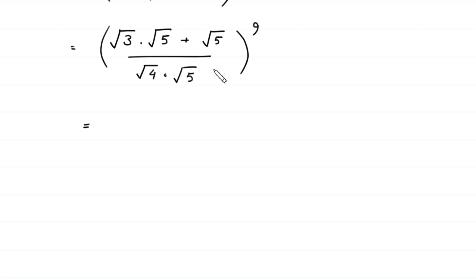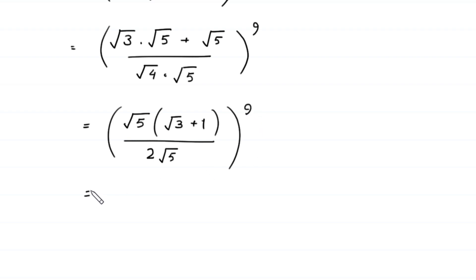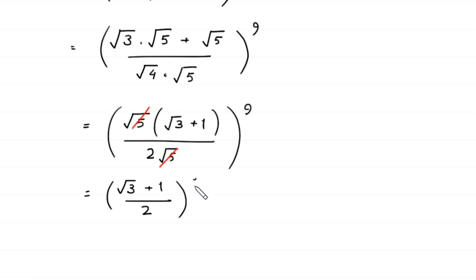From here we can factor out square root of 5 as a common factor, leaving square root of 3 plus 1 in the bracket, divided by square root of 4 which equals 2, times square root of 5, whole to the power 9. The square root of 5 cancels, leaving square root of 3 plus 1 over 2, whole to the power 9.